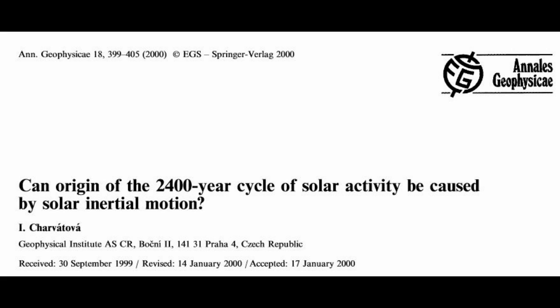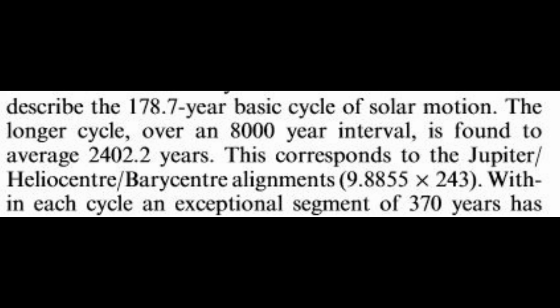This was in solar cycle 23. We've now supposedly peaked solar cycle 24. There's predictions in here for the upcoming cycles, and it's spot on. So it breaks down to a 178.7-year basic cycle within an 8,000-year interval, which breaks down to about 2,402 years for a grand cycle. That corresponds to the Jupiter-Heliocenter-Barycenter alignment. And contained within that, there's a 370-year exceptional cycle, which we'll talk about.